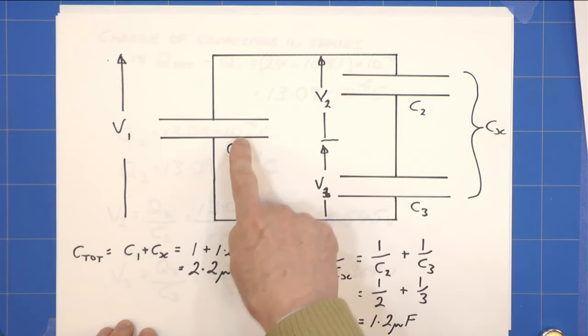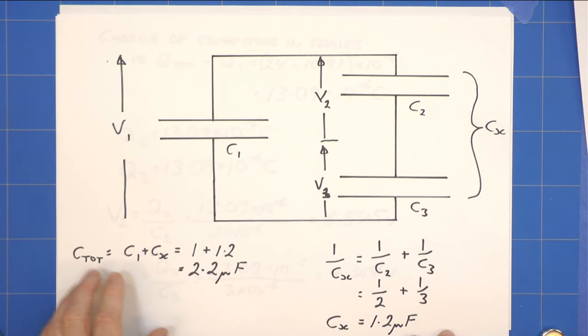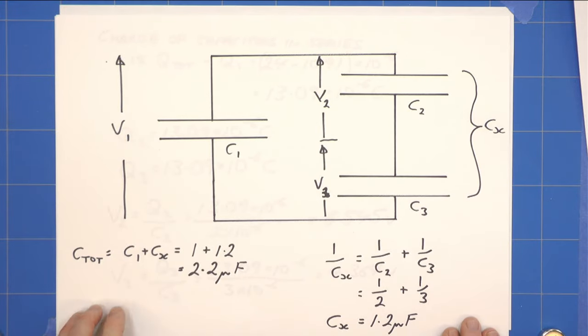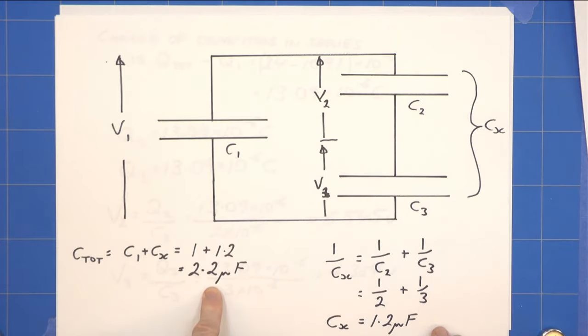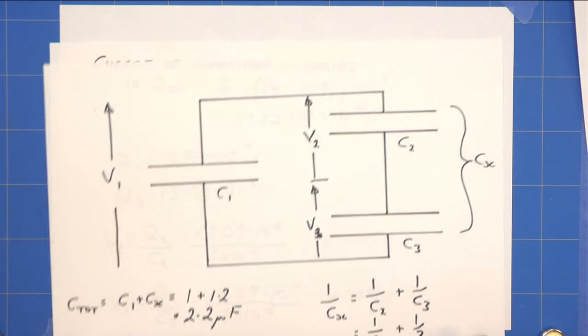Here we know it's one microfarad, so simply in parallel we add the two together. 1 plus 1.2 gives us a new capacitance for the whole circuit of 2.2 microfarads.